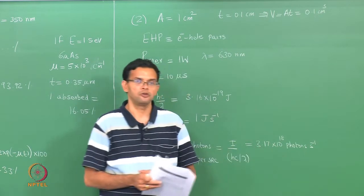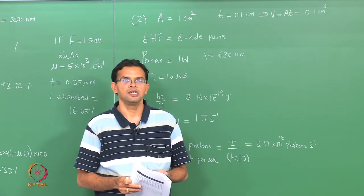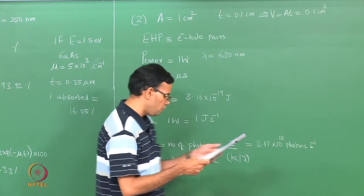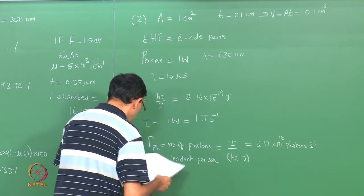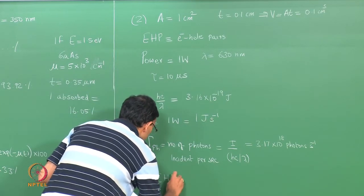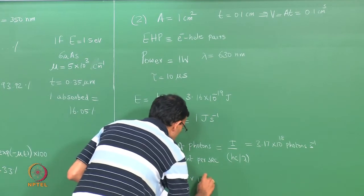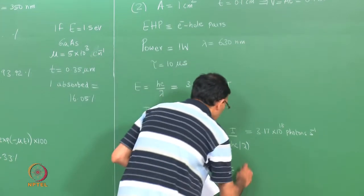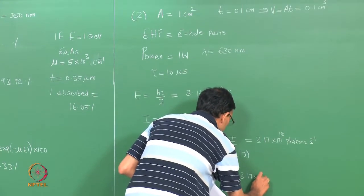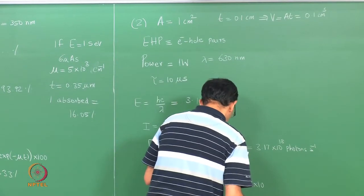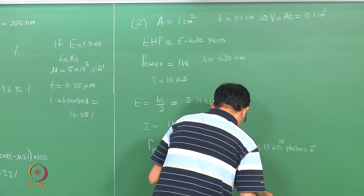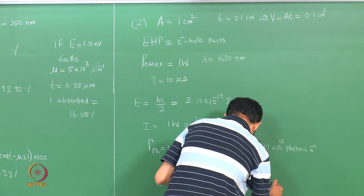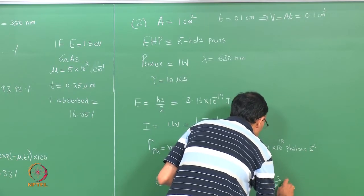With 100% quantum efficiency, the photons incident will give rise to an equal number of electron-hole pairs. The number of electron-hole pairs per unit volume is 3.17×10¹⁹ per cm³ per second — simply dividing the number of photons by the volume.